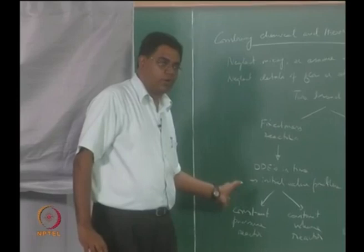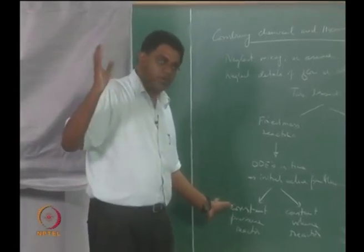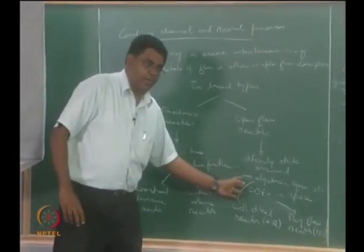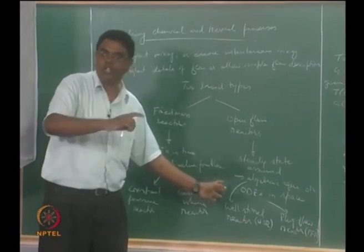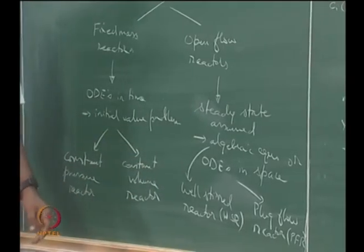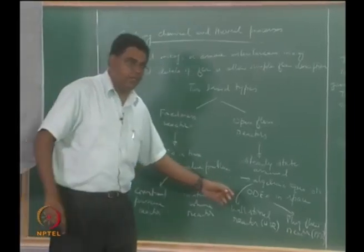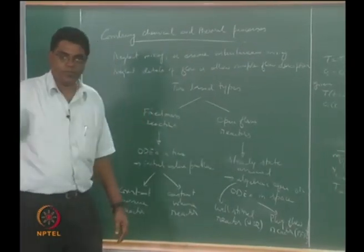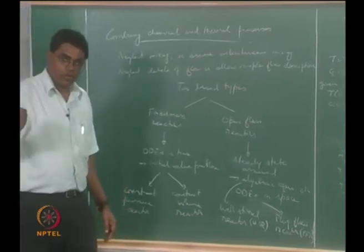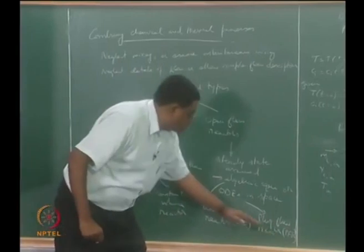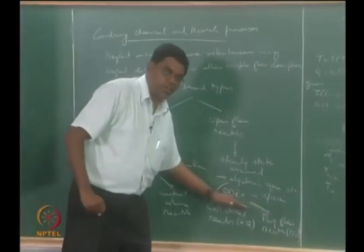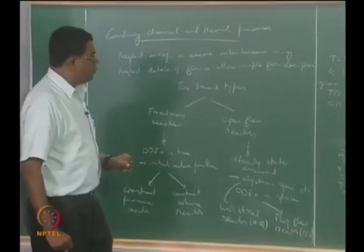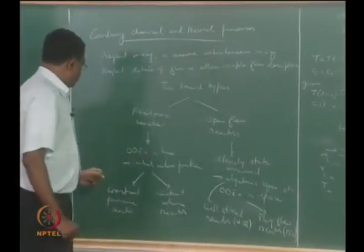You could also formulate the problem as ODEs and suppose you can solve them. If we can solve ODEs in time, why not solve ODEs in space? If we solve ODEs in space, that means we allow for only one spatial variable — a one-dimensional variation in space — which will lead to the plug flow reactor, with d/dx kind of derivatives.